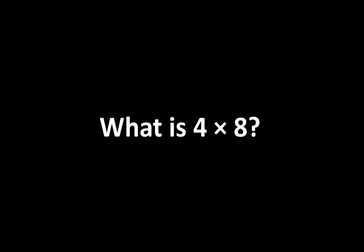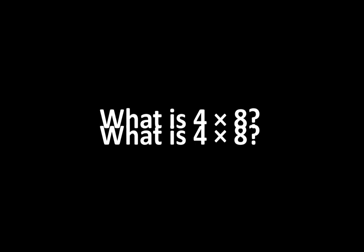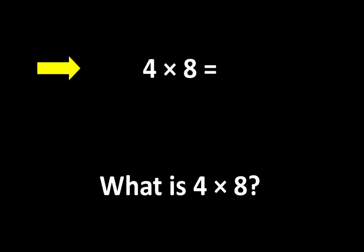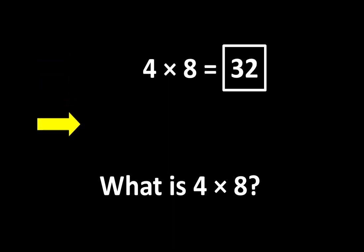Every now and then you might hear someone ask, what is 4 times 8? And you may hear someone else answer, 4 times 8 is 32. What is interesting is that this question can mean several different things. What they might mean is, 4 times 8 is equal to what number? The answer to that question is 32. And that is an important idea.